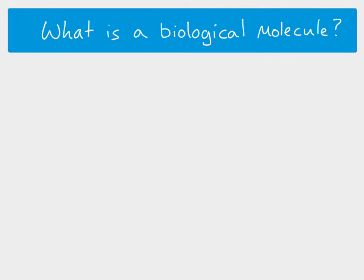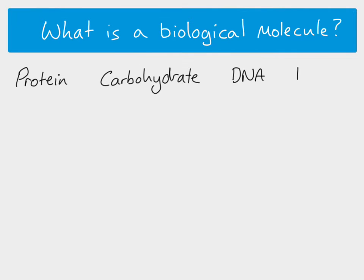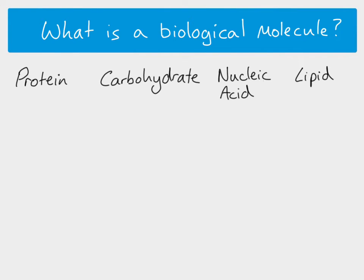You already know lots of examples of these molecules. The main groups are proteins, carbohydrates, DNA, and fat. These are all biological molecules and they are all big molecules. I'm going to change 'fat' and call it 'lipid,' because a fat is a smaller group whereas a lipid is a larger group covering more kinds of molecules. I'm also going to change 'DNA' to 'nucleic acid,' because nucleic acid is the bigger group and DNA is just one example of a nucleic acid.